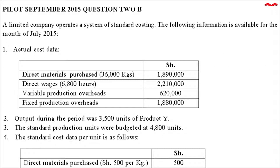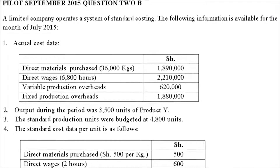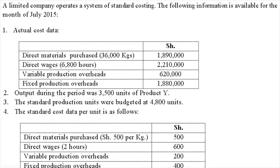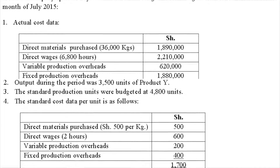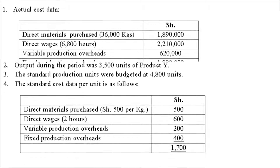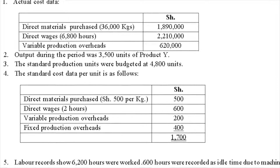Direct wages — 6,800 hours, total 2,210,000 shillings. Variable production overheads total 6,000,000 shillings. Fixed production overheads total 1,888,000 shillings. Number two: output during the period was 3,500 units of product Y.